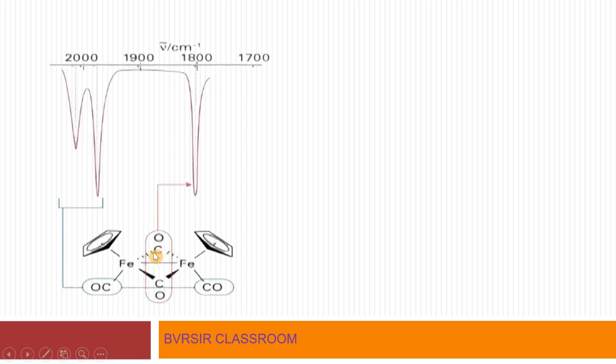In the bridging CO, the carbon-oxygen bond is a double bond. In contrast, in terminal carbon monoxide, the carbon-oxygen bond is a triple bond. Since a triple bond is stronger than a double bond, the terminal CO has a higher stretching frequency value in the IR spectrum.